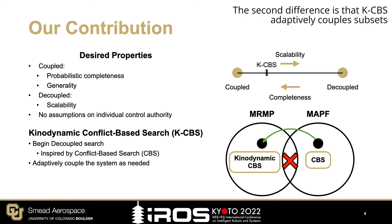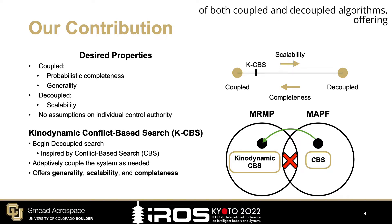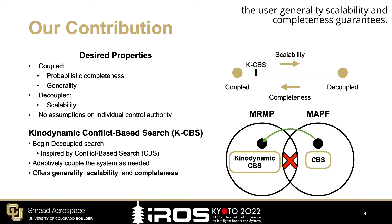The second difference is that KCBS adaptively couples subsets of robots to improve the search as needed. This enables KCBS to extract the advantages of both coupled and decoupled algorithms, offering the user generality, scalability, and completeness guarantees.